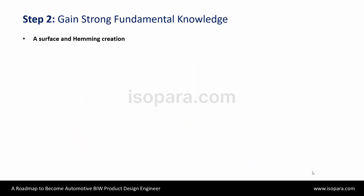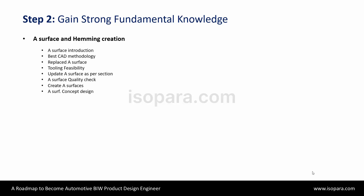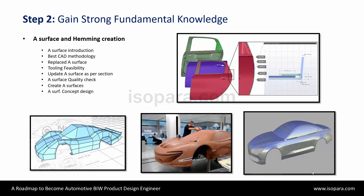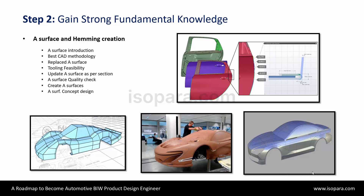Here, you have to understand what are the AE surface parts in BIW design. A door, hood, or fender of a car — the outer panel that you see while standing outside the car — is made with a styling surface, also known as AE surface. You will understand the complete design and development of outer panels and inner reinforcement. You will learn CAD methodology skills like how to replace AE surface, check tooling feasibility, update an AE surface as per sections, and perform AE surface quality checks.